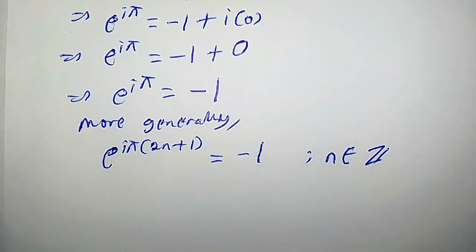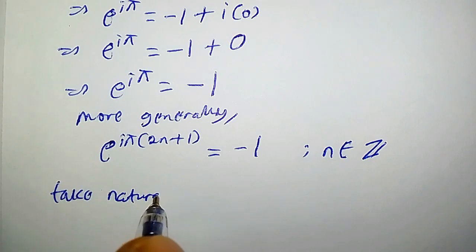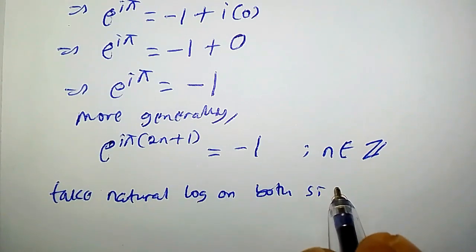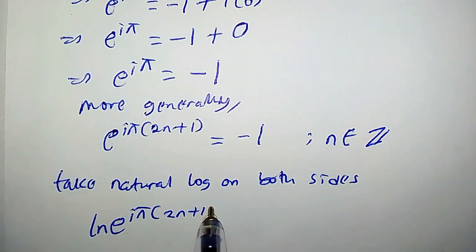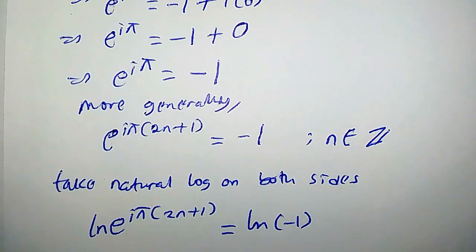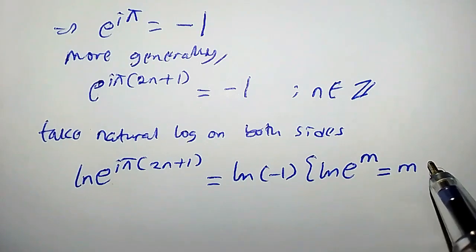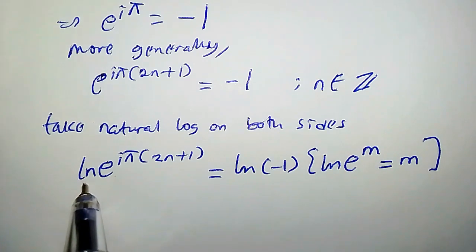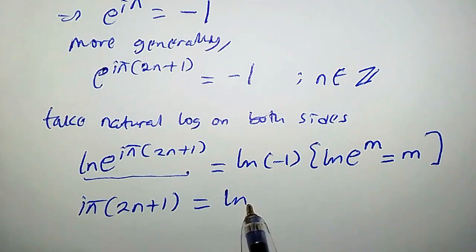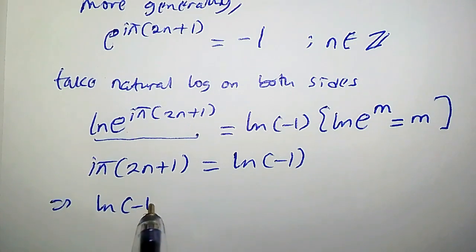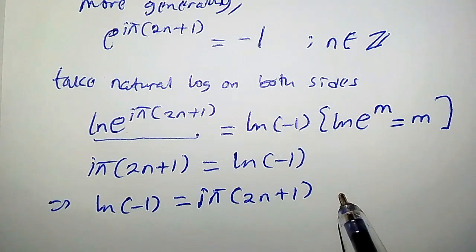Now take the natural log of both sides. We have ln(e^(iπ(2n+1))) = ln(−1). Since ln(e^m) = m, applying this property gives us iπ(2n+1) = ln(−1). This means ln(−1) = iπ(2n+1). Take note of this — it is very important.